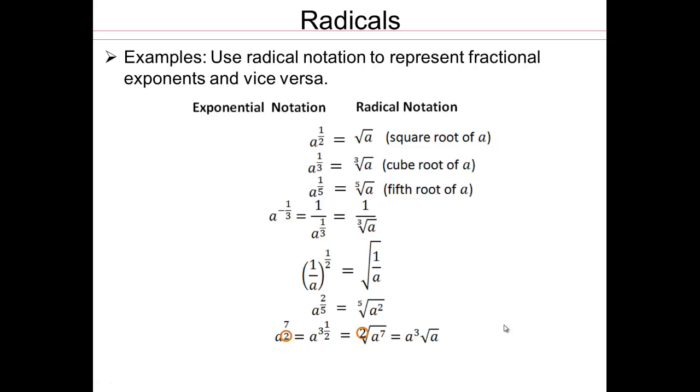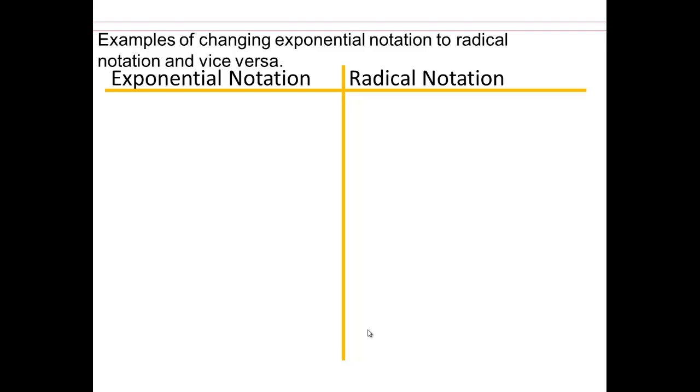So 2 is the index here. But remember, when it's the index of 2, we don't write it, right? We just say it's square root. So again, 2 is the index. And a to the 7 is the radicand.